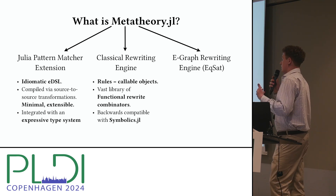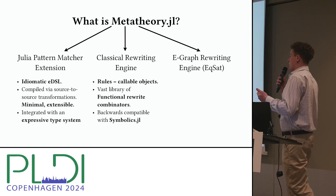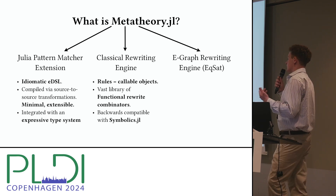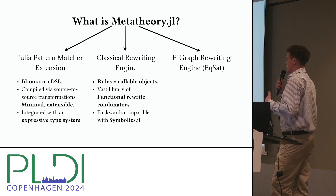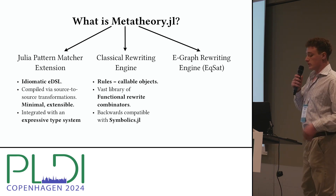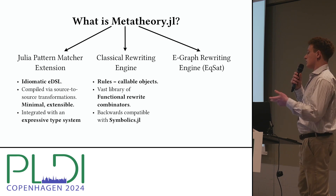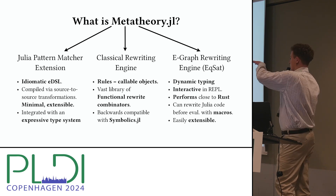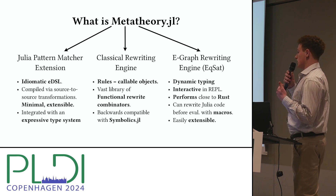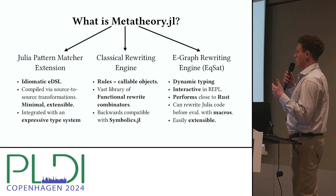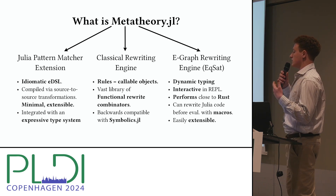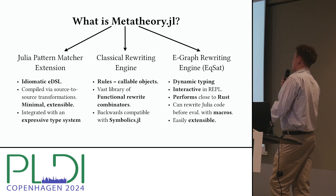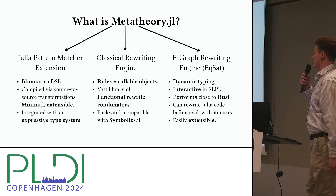The pattern matching DSL is compiled via source-to-source transformation — it's minimal and extensible, just macro expansion, and integrated with an expressive type system so we can go back and forth with Julia's type system features. We have a classical rewriting engine where rules are callable objects — structs that hold pattern matching functions — so you can combine them with higher-order functions, functional combinators like fixed points or chains of rewrite rules. It's backward compatible with Symbolics.jl. The e-graph engine is dynamically typed, so you're not fixed to a single expression language.